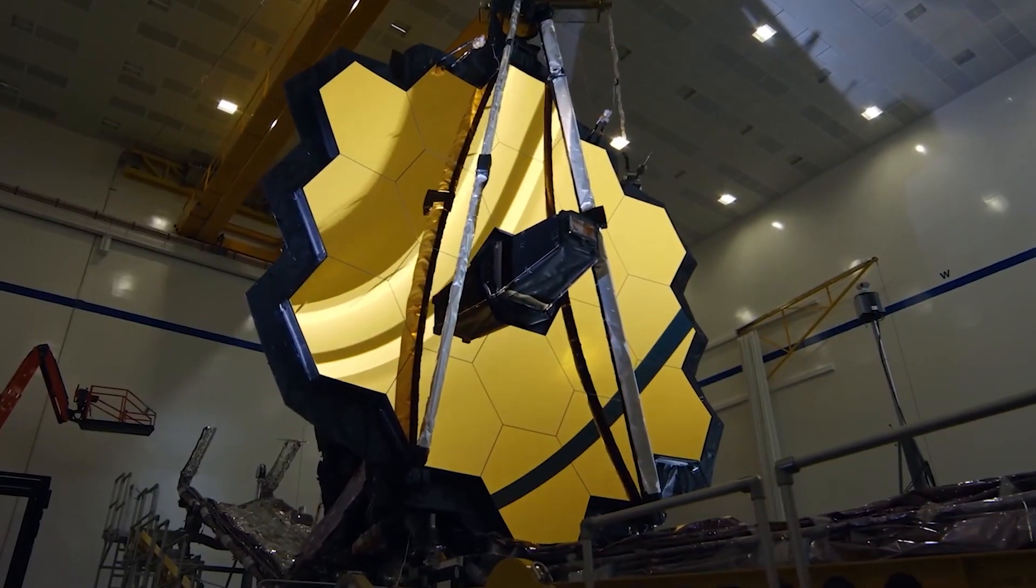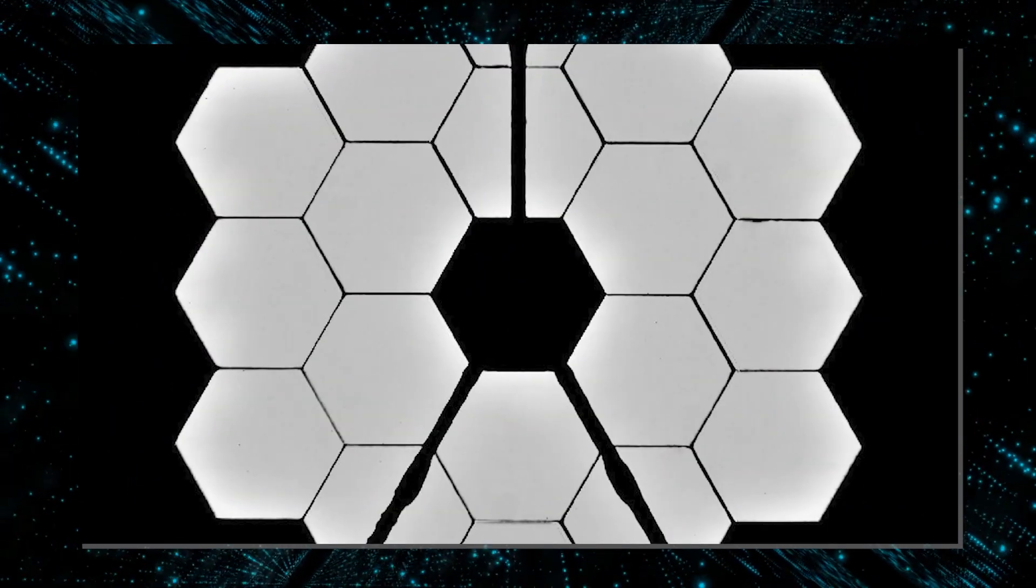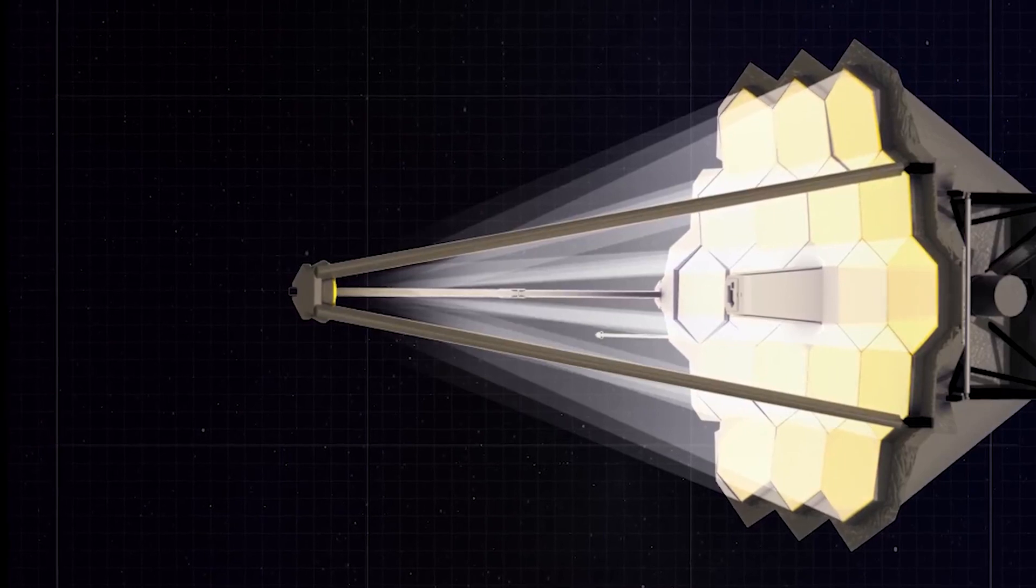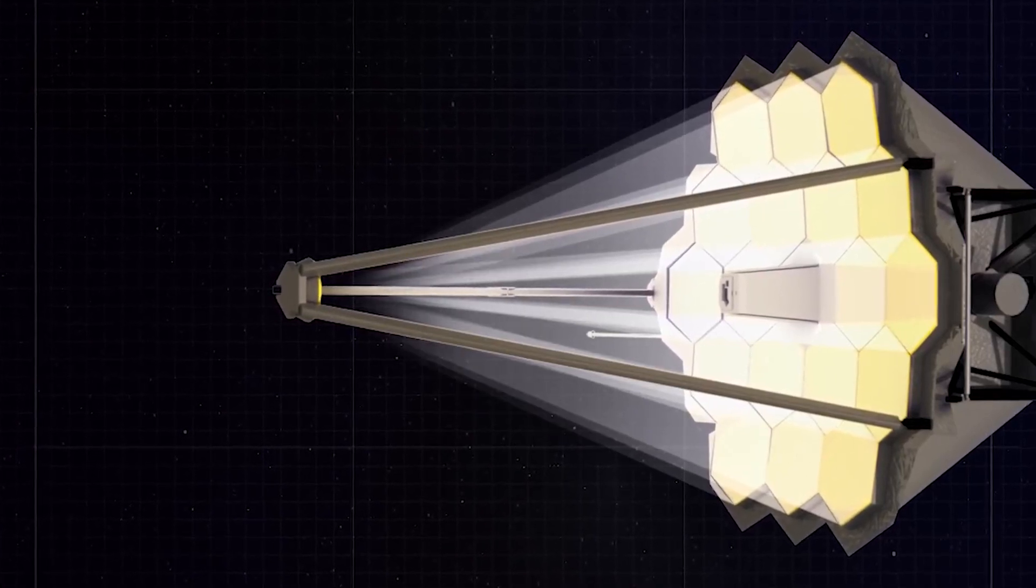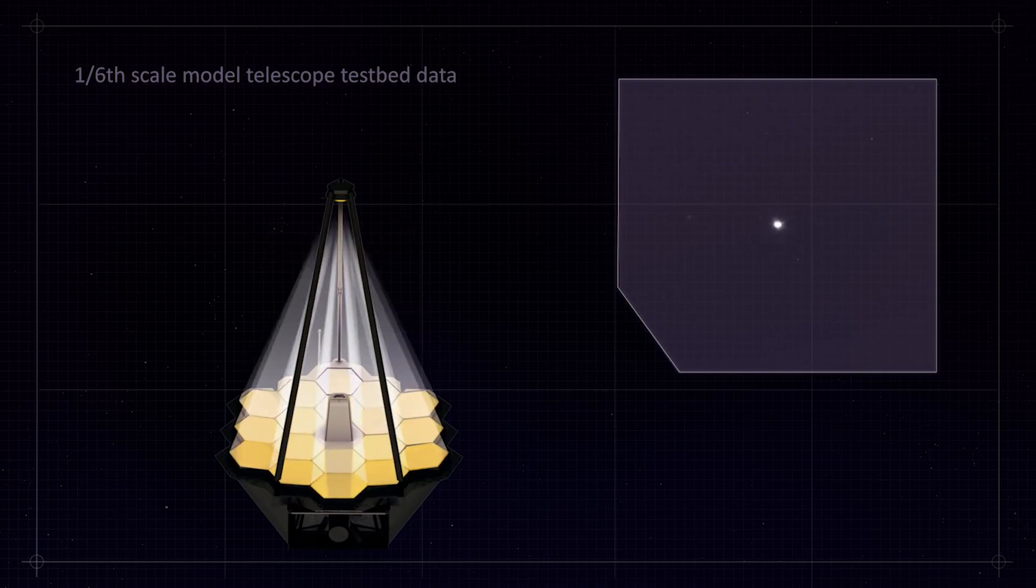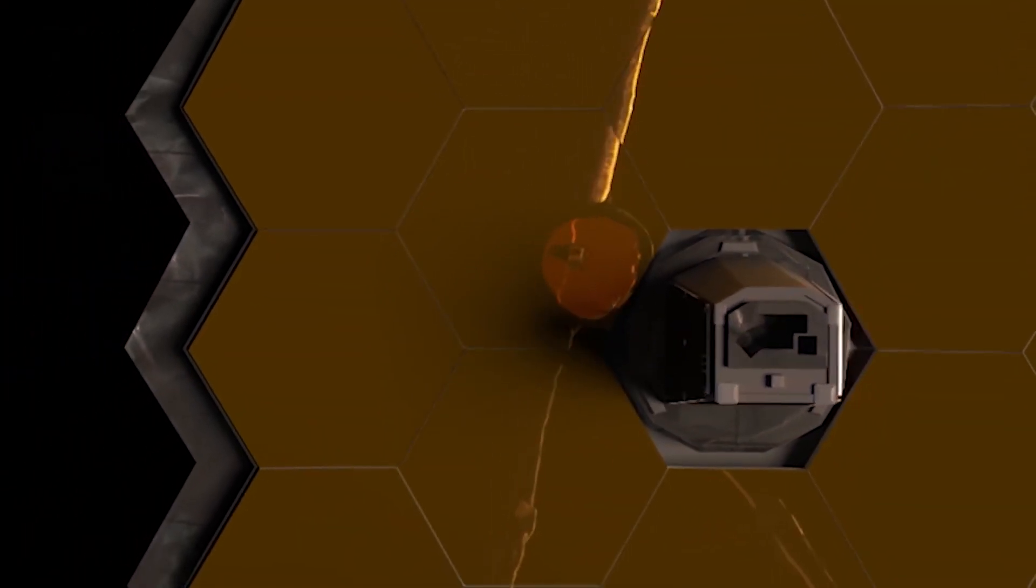One of the first images sent back by the JWST was a selfie of the telescope itself, which made the NASA staff go, holy cow. The image showed Webb's primary mirror with all of its 18 segments collecting light from the same star. Even though the mirror segments were yet to be aligned at the time, the selfie showed that each segment of the primary mirror was working properly.